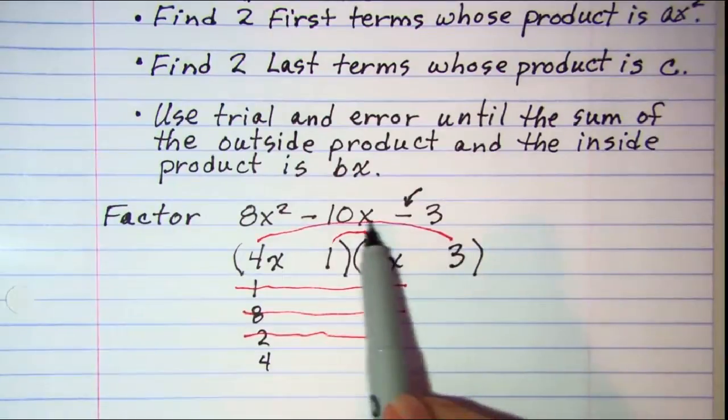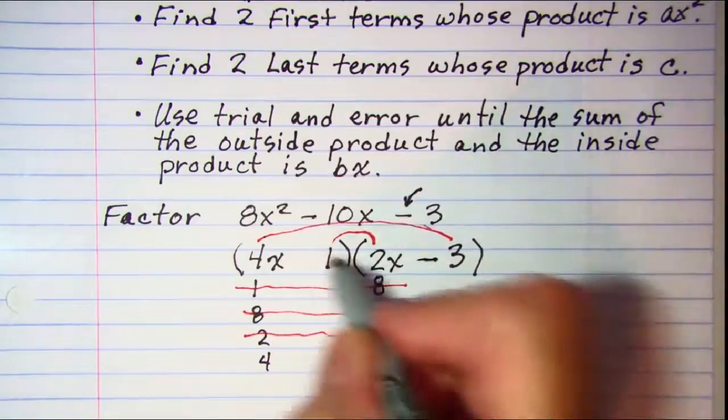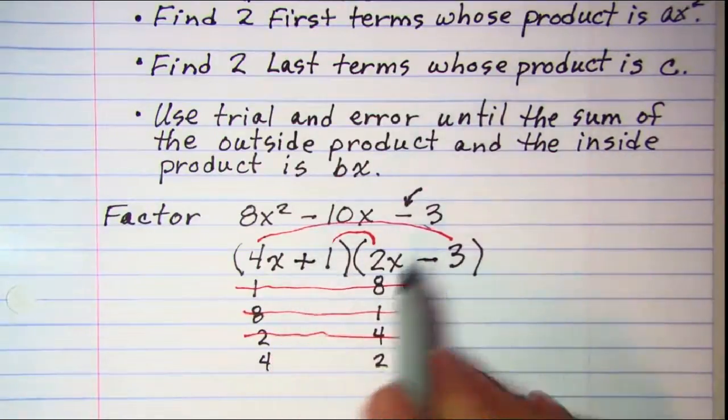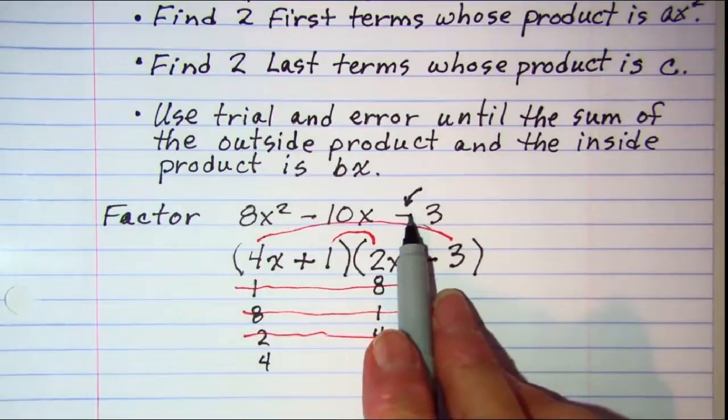Which means I need my larger product, which is this 12x, I need that to be a negative product. And then this one will be a positive. Remember we said that the signs would be different, because this was a negative.